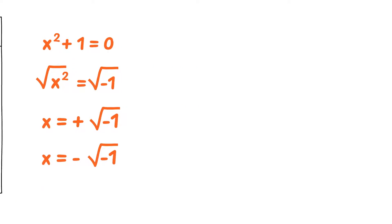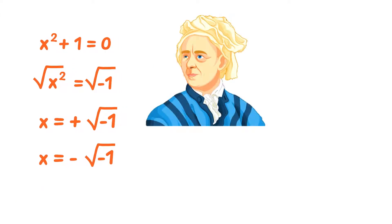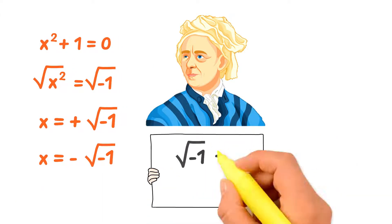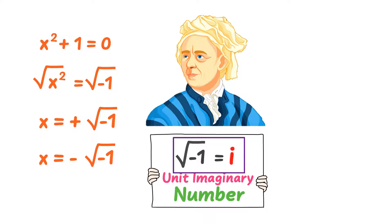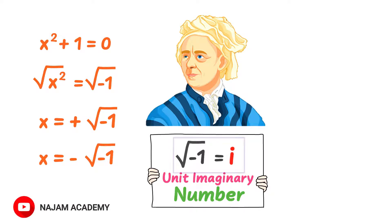But now, you are going to learn its solution. It was Euler who gave the symbol i to the square root of negative 1 and called it the unit imaginary number. Because we can only imagine the square root of negative 1 and it is thought to be impossible. Thus, whenever you see square root of negative 1, remember that it is always equal to i, a unit imaginary number.